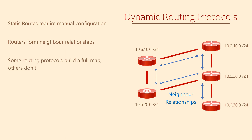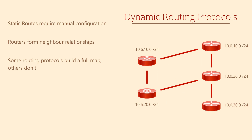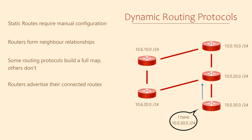Some routing protocols will use this information to build a full map of the network. Others only concern themselves with direct neighbours — this is more like following road signs to get to a destination. Each router will advertise their connected networks, saying: if you want to reach this network, send your packets this way. A neighbouring router then receives this advertisement and stores a copy of the route in a table in memory.